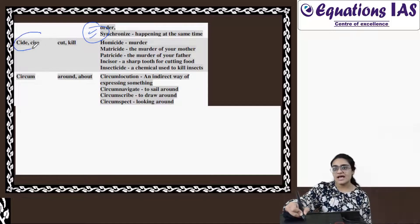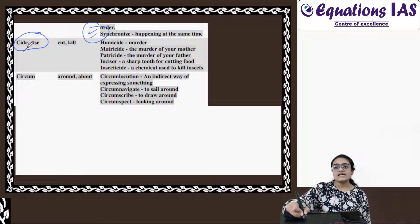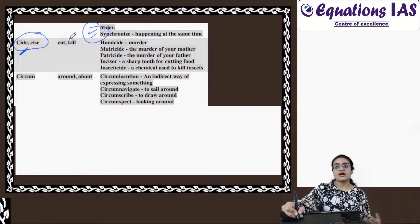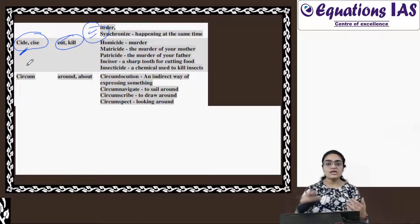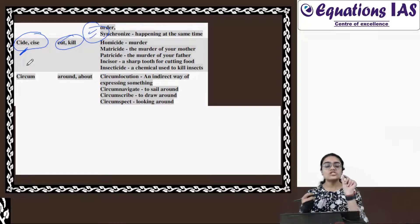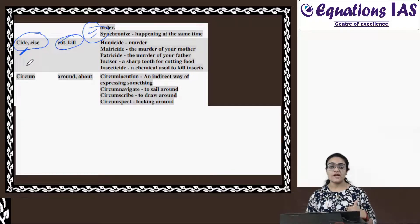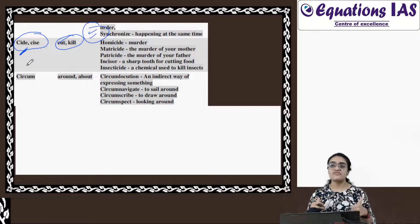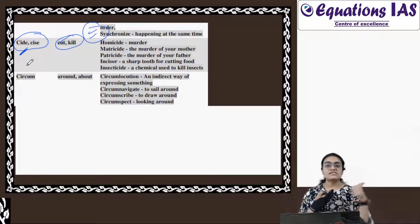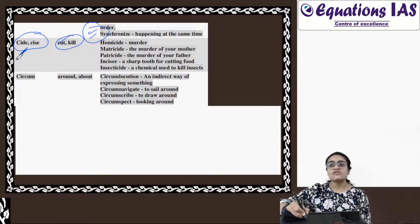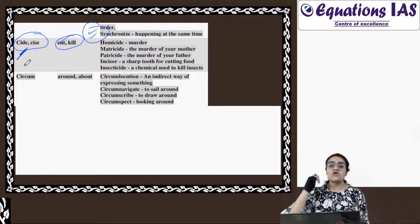Then, the word, very important - Cide and Cise. C-I-D. It is something which is related to killing and cutting. Either you, this is related to killing someone. Everything which carries Cide and Cise. As I have told you, your root words, either they are prefix - prefix matlab pehle, or they are suffix - this means at the end of the word, right? So it varies. Like Cide or Cise is a suffix. It is always added at the end of the word to give its meaning.